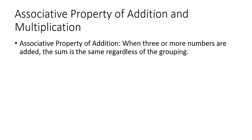The associative property of addition and multiplication. The associative property of addition is when you have three or more numbers that are added, and the sum is the same regardless of the grouping.